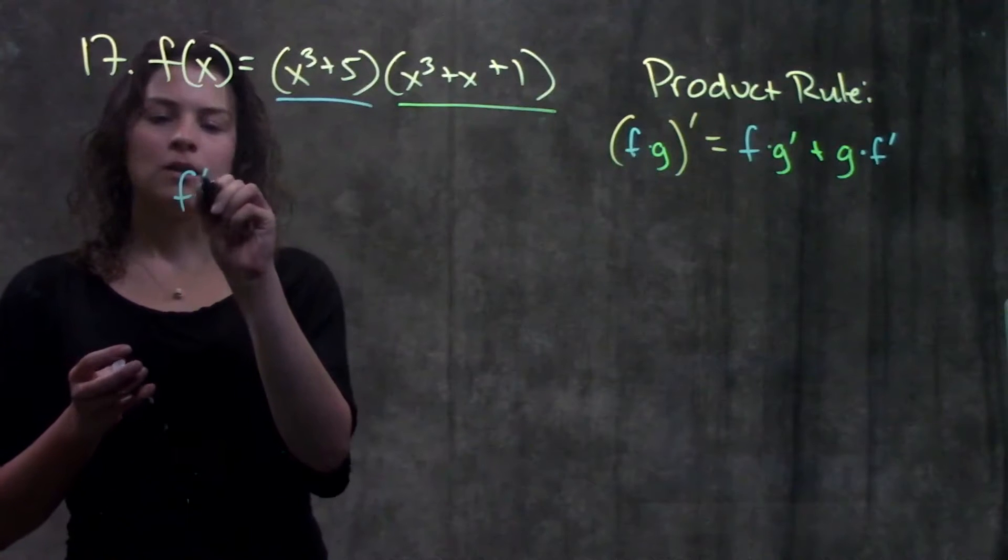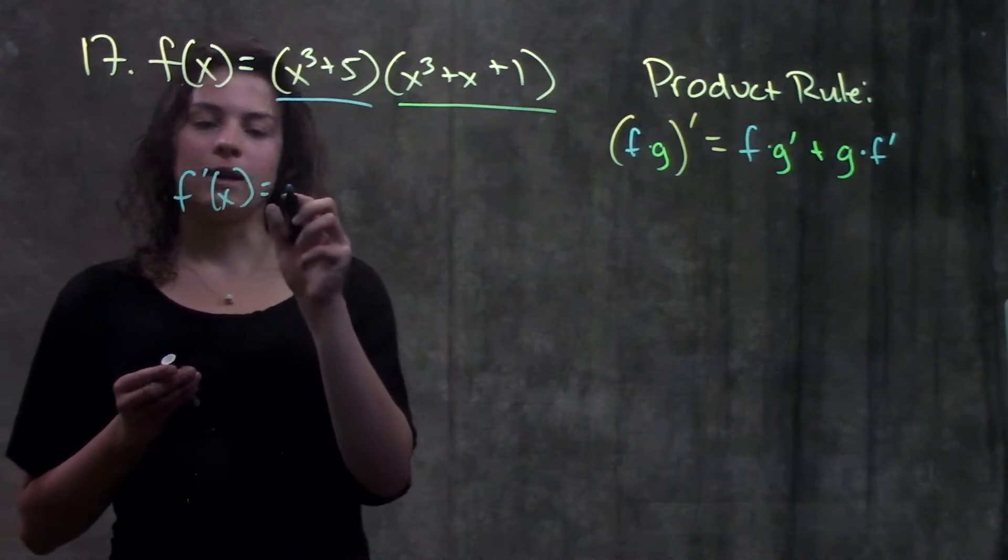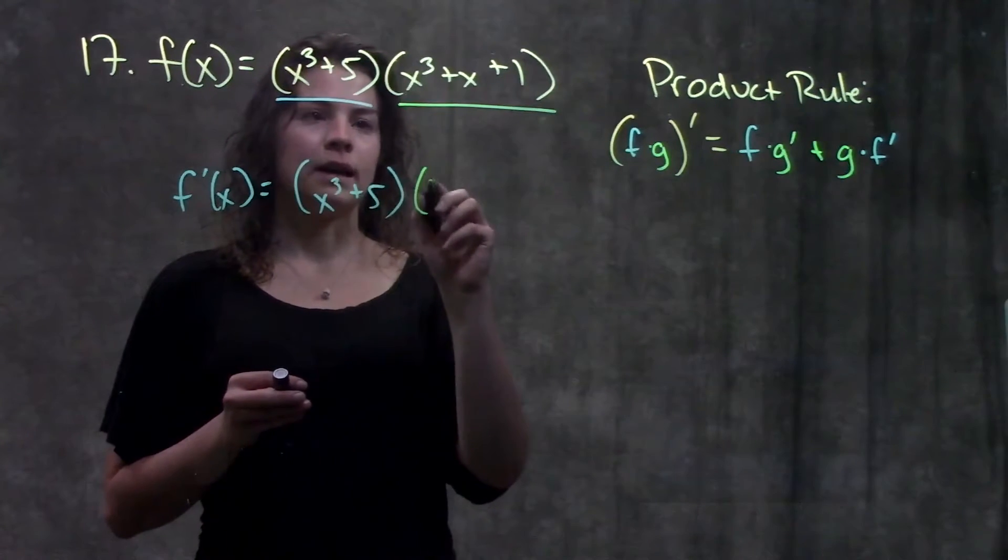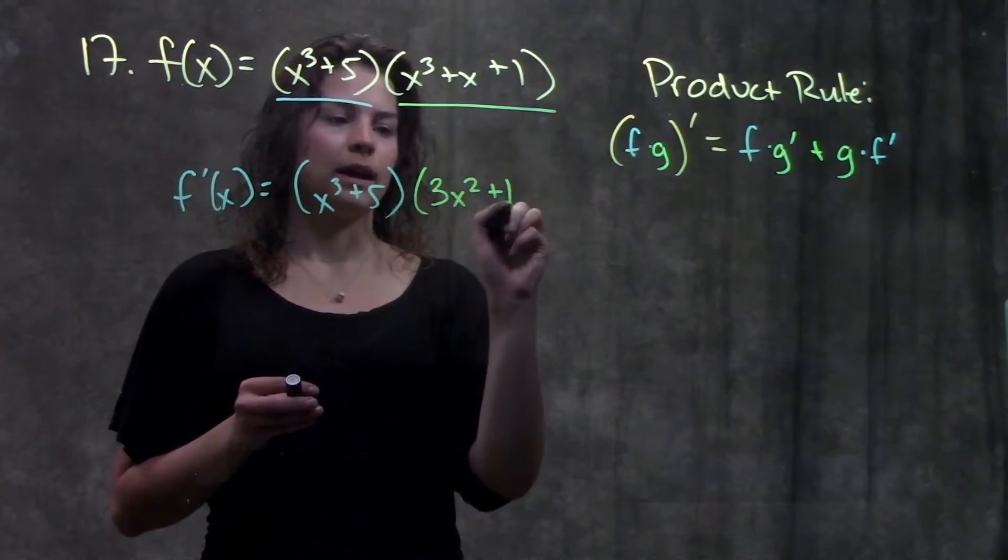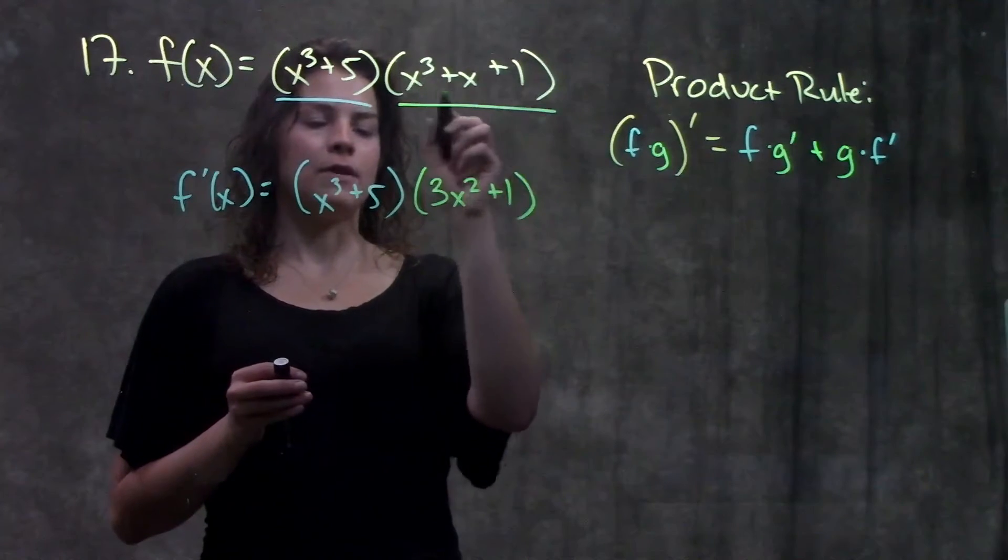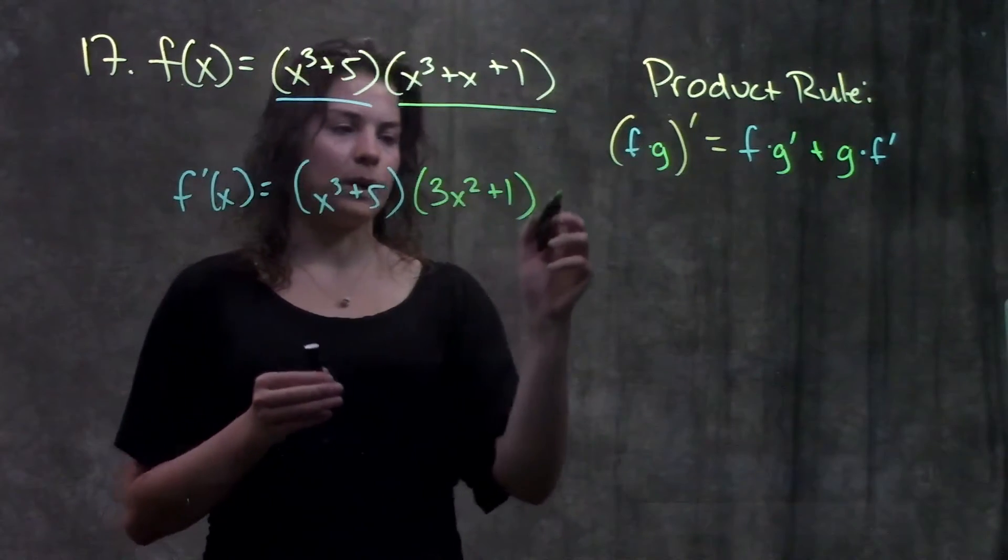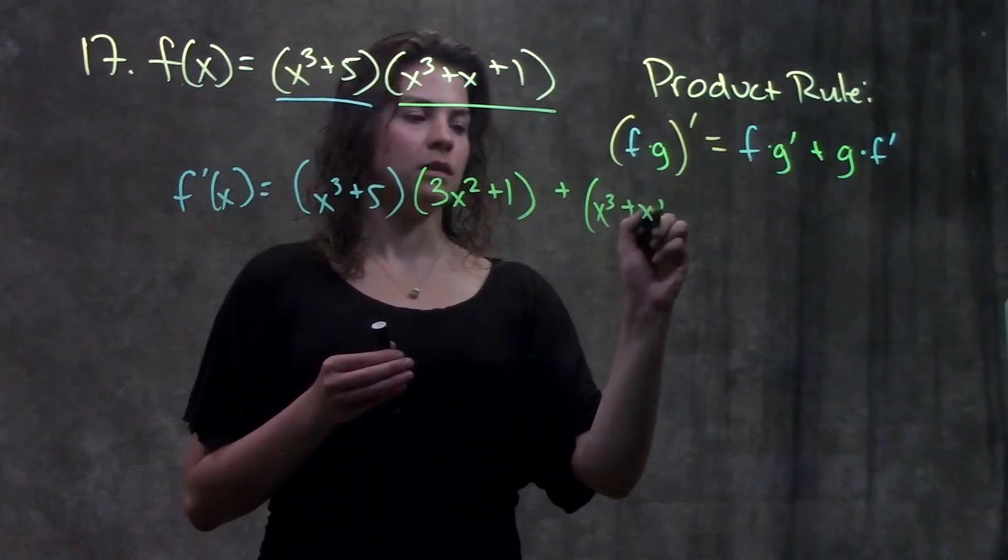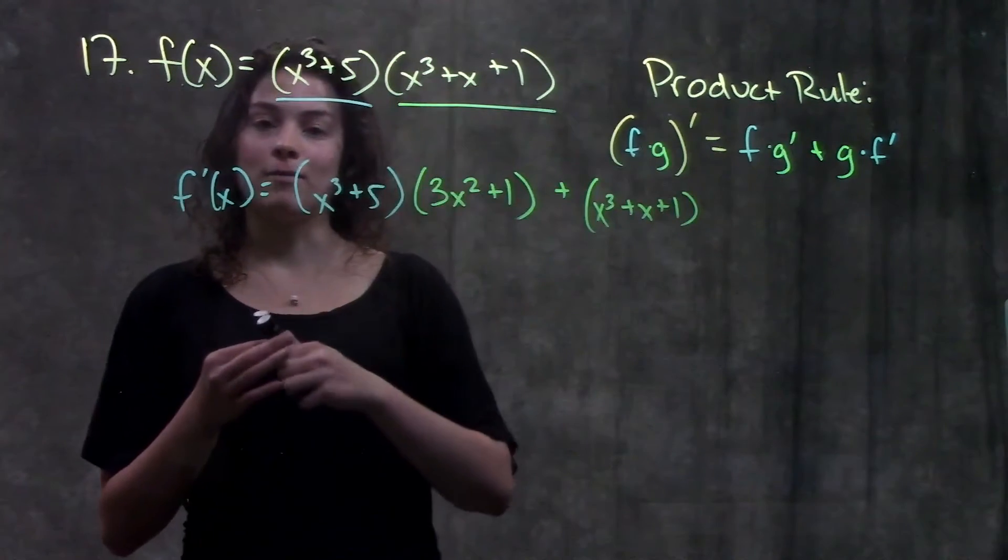So if you remember, the rule tells us that the derivative of this function is the first times derivative of the second. For the second, I'm just going to use power rule for this. And the derivative of this function becomes 3x squared plus 1 plus my original second function times the derivative of my first function.